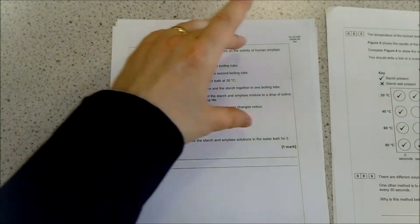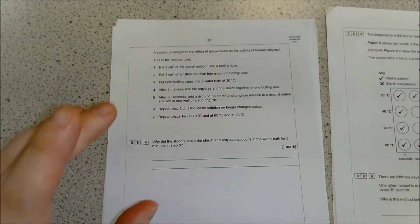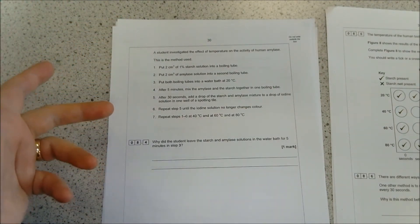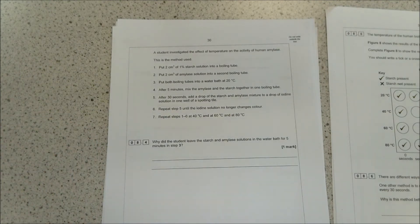Moving on, it now goes to the investigation. As always it gives you lots of information. Be really careful that you go through and read it properly. Anything key, I would probably think about underlining. It says the student used the method below: put two centimeter cubed of one percent starch solution into a boiling tube, put two centimeter cubed of amylase into a second boiling tube, put both of them into a water bath. After five minutes mix them together. After 30 seconds put a drop in a spotting tile.